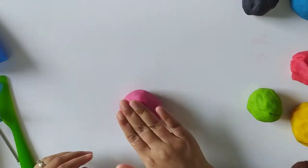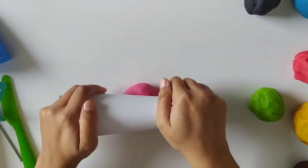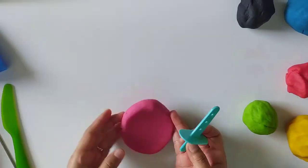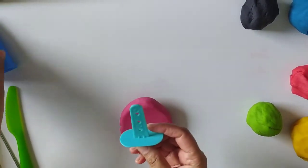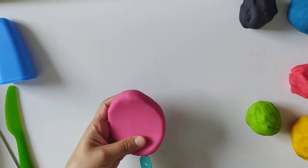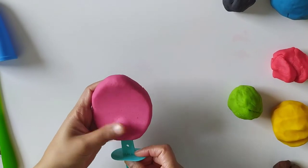Let's make some cute play-doh popsicles. I'm going to roll this pink play-doh to make a strawberry flavor popsicle. Next I'm going to insert the stick, just like that.